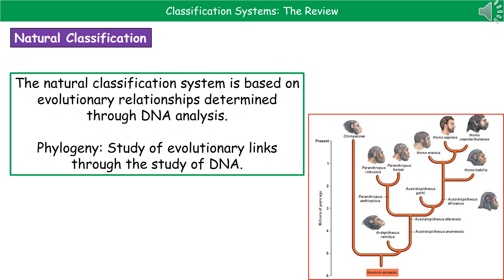The second classification system is the natural classification system. This is based on evolutionary relationships, which have been determined by analyzing the DNA of different species. What we do here is carry out a study called phylogeny, which is basically looking at evolutionary links through studying the DNA — seeing how similar the DNA actually is — and from that we can build up a family tree.